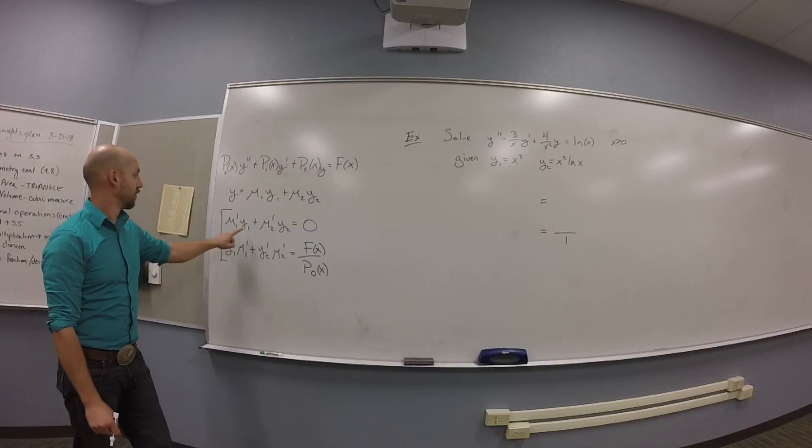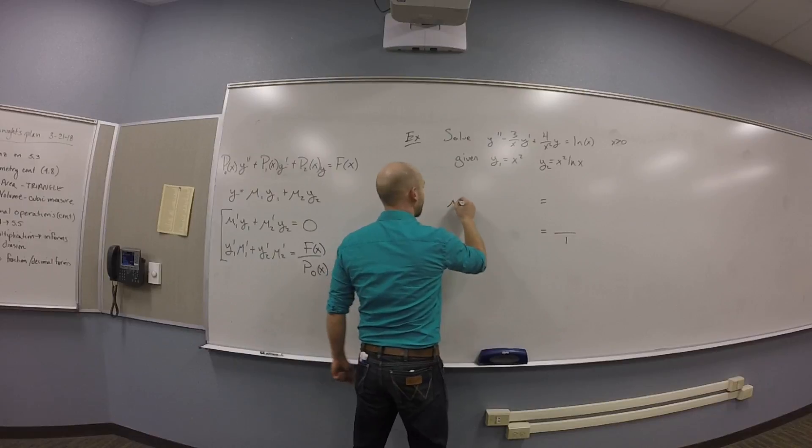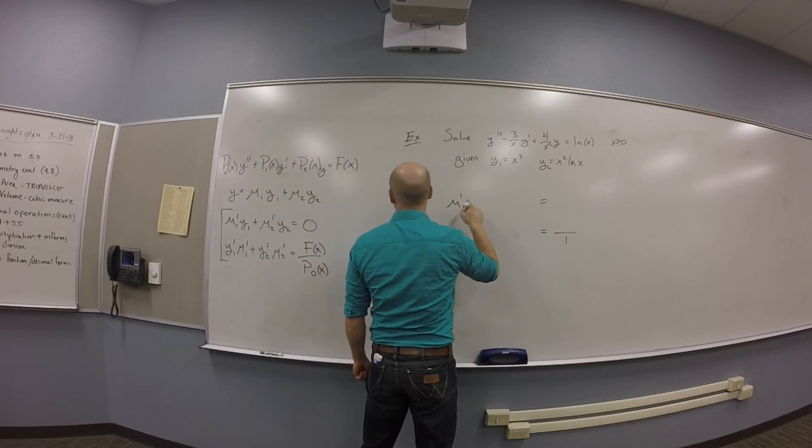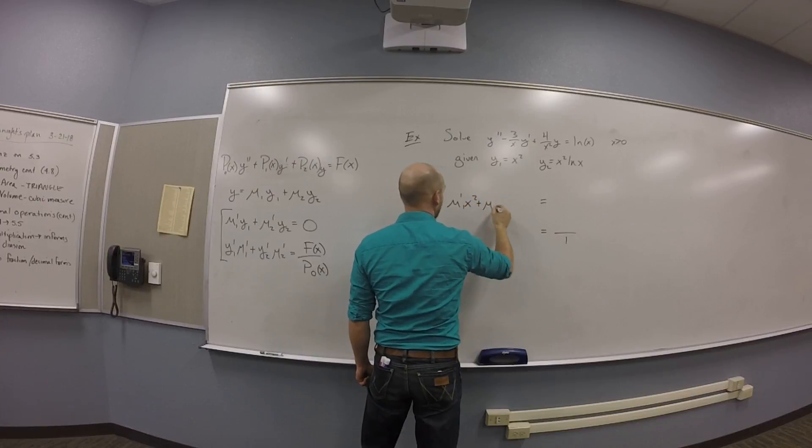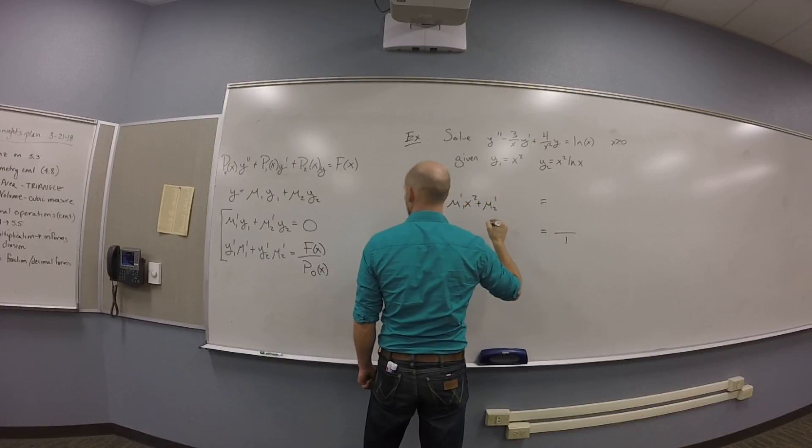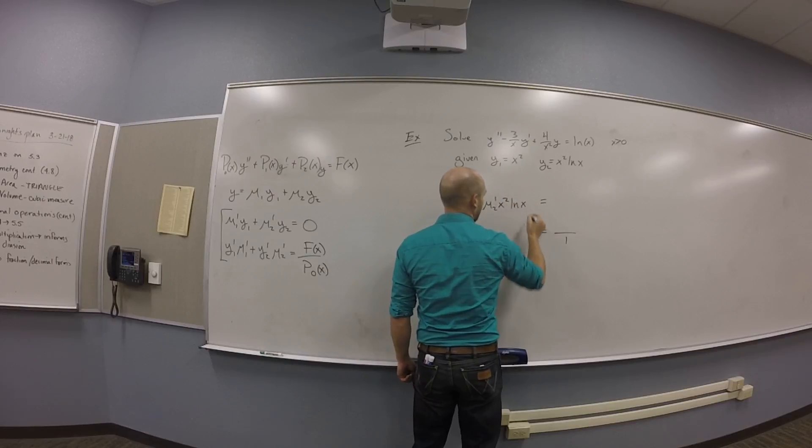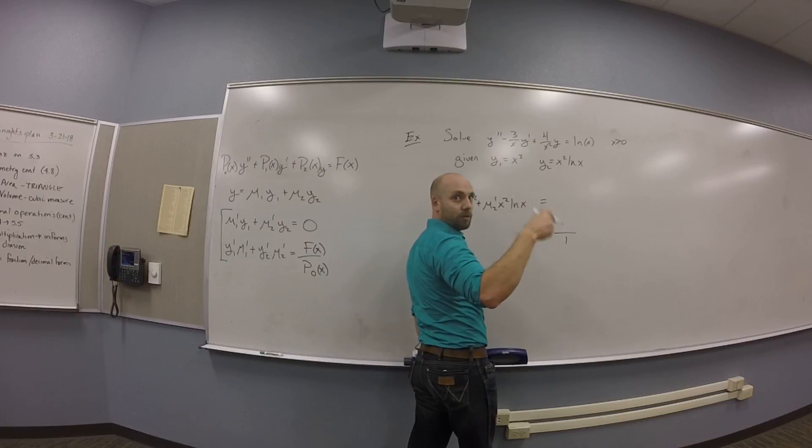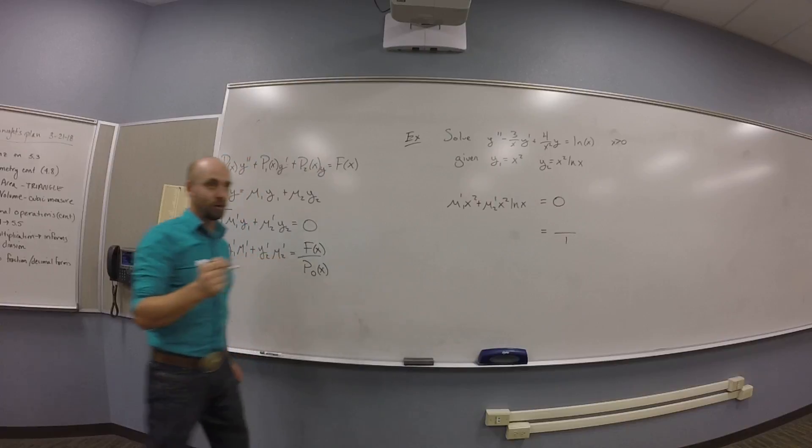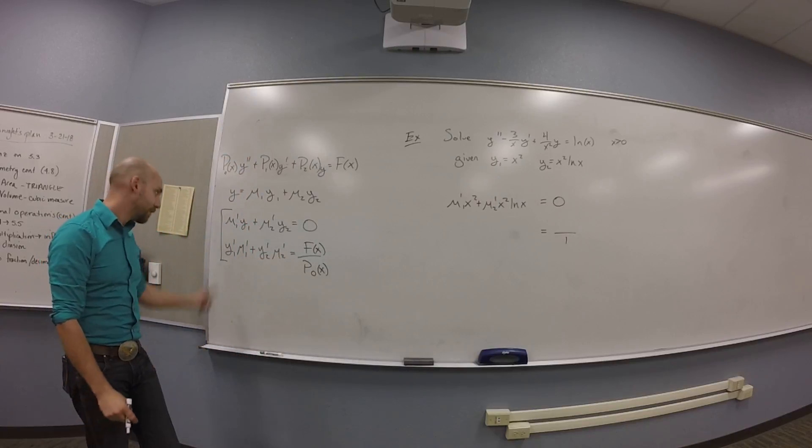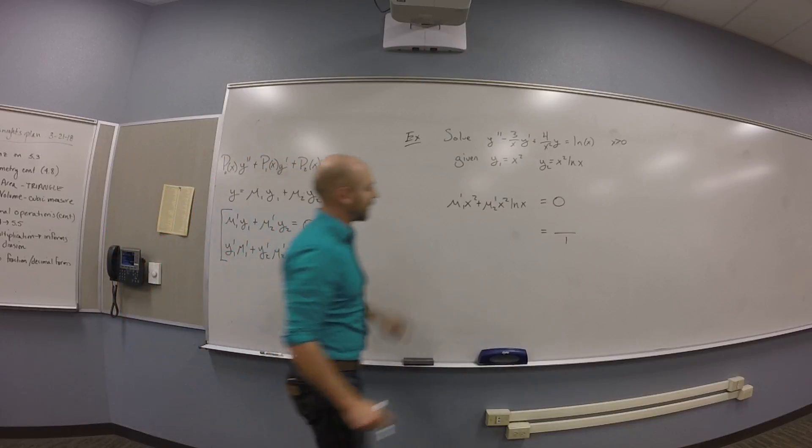What other pieces do you know? Y1 and Y2. Okay. Y1 and Y2. Do you know mu1 and mu2? No. So you need mu1 prime and then what's Y1? X squared plus mu2 prime and Y2 is X squared times the natural log of X. And this is supposed to equal 0. You guys like the cookbook feel here? F of X is natural log of X.